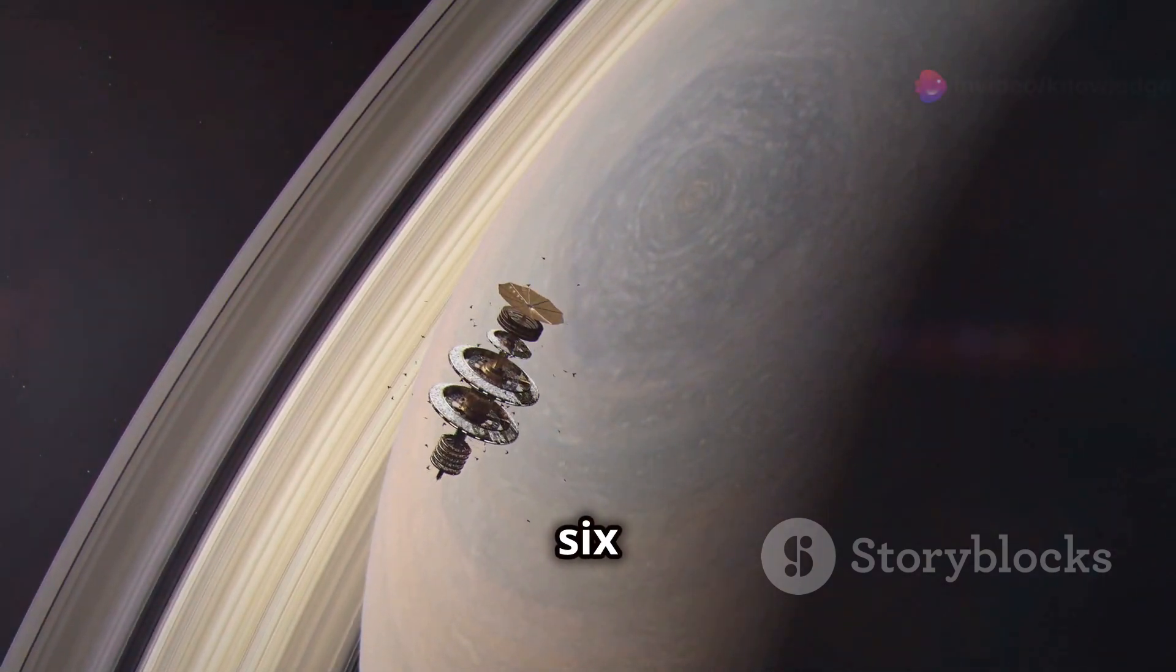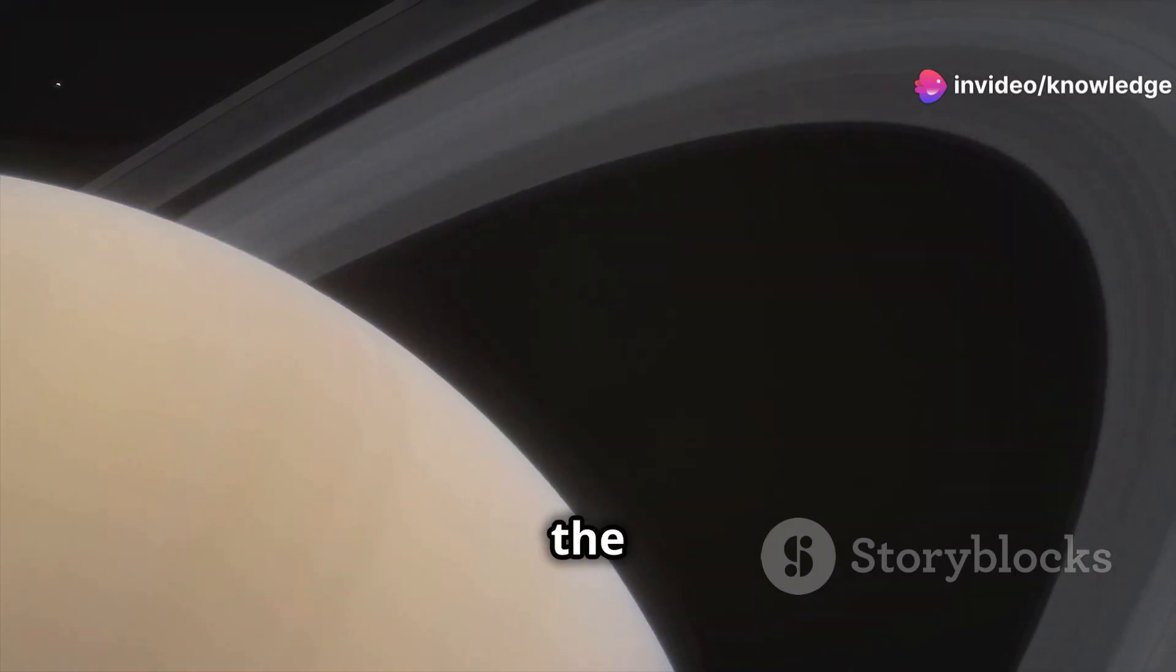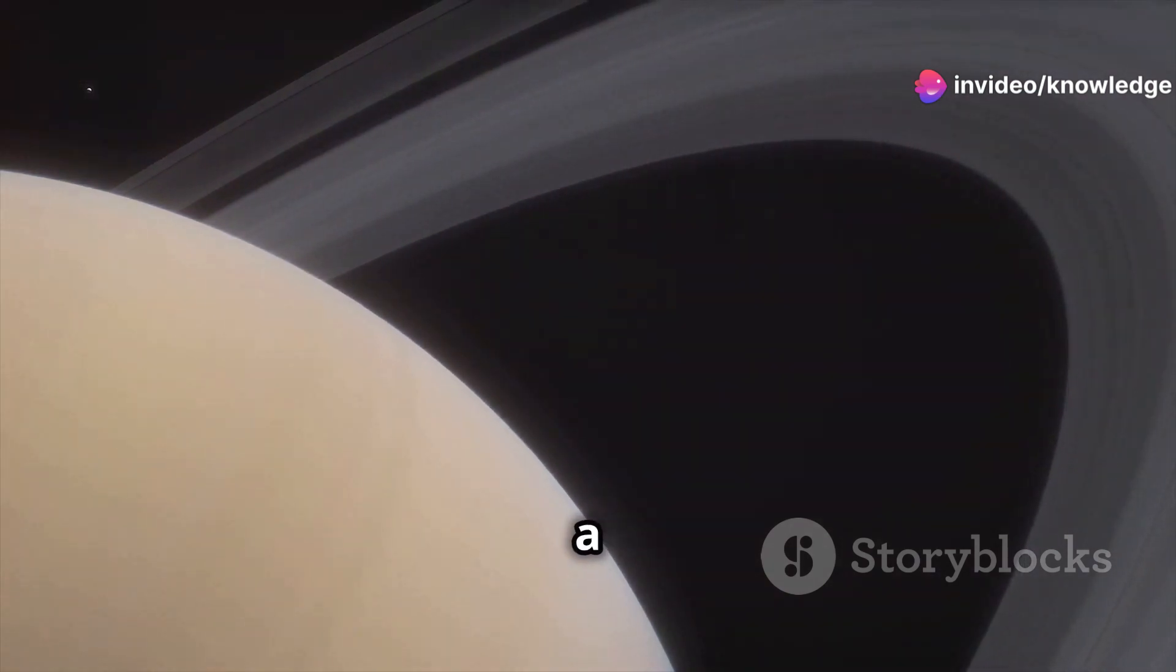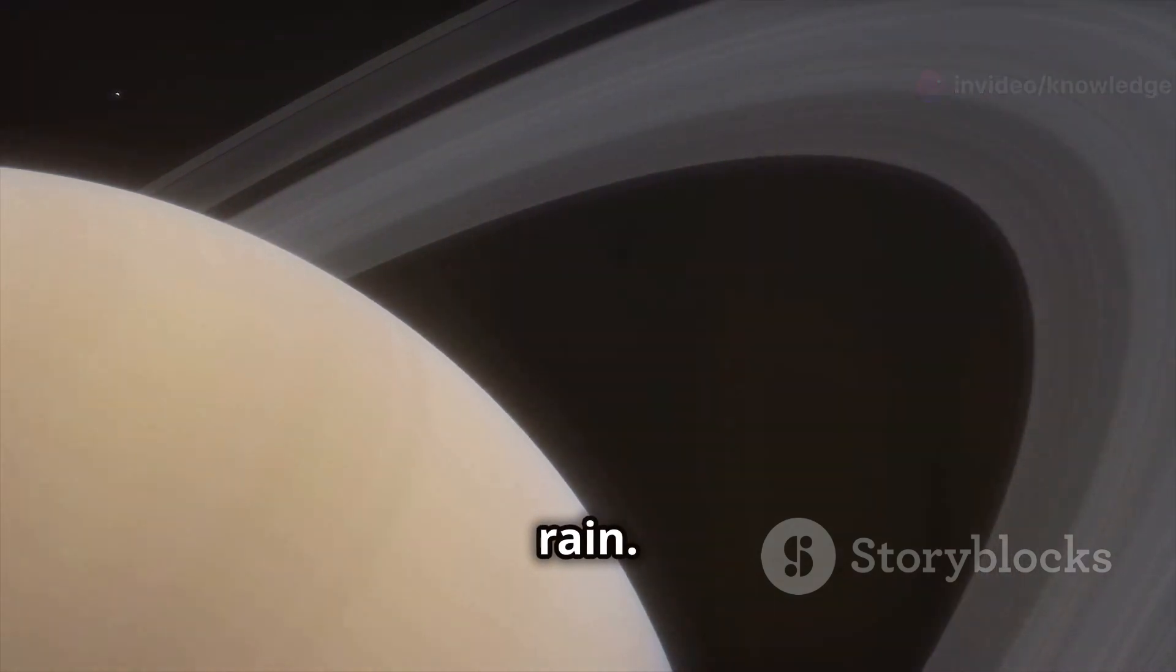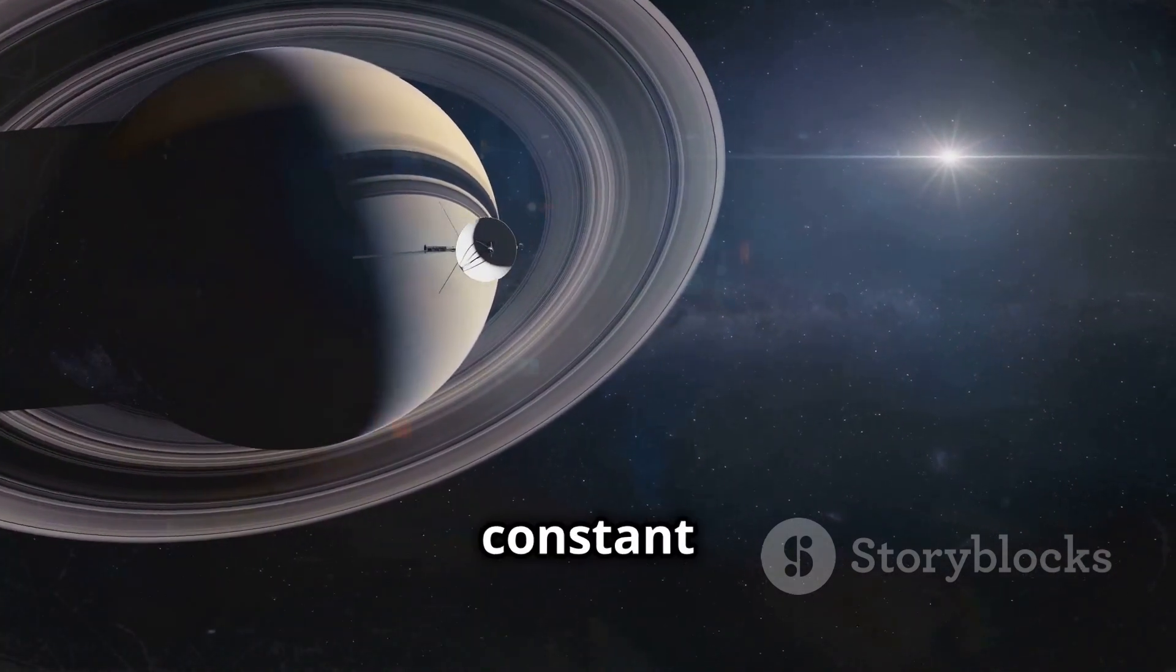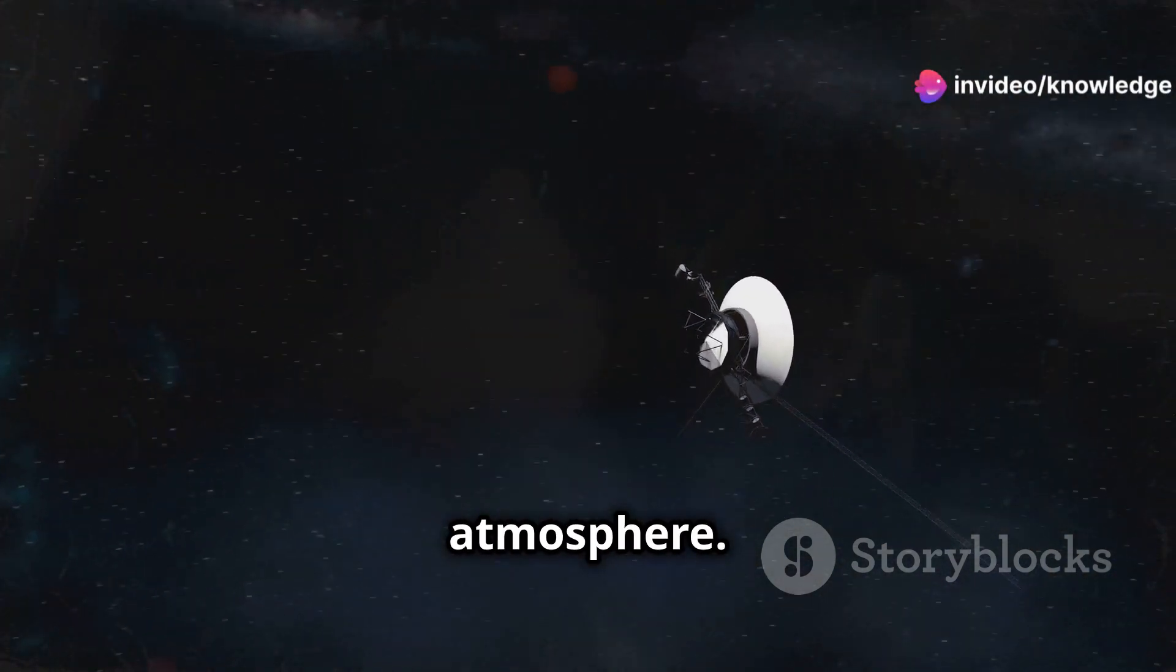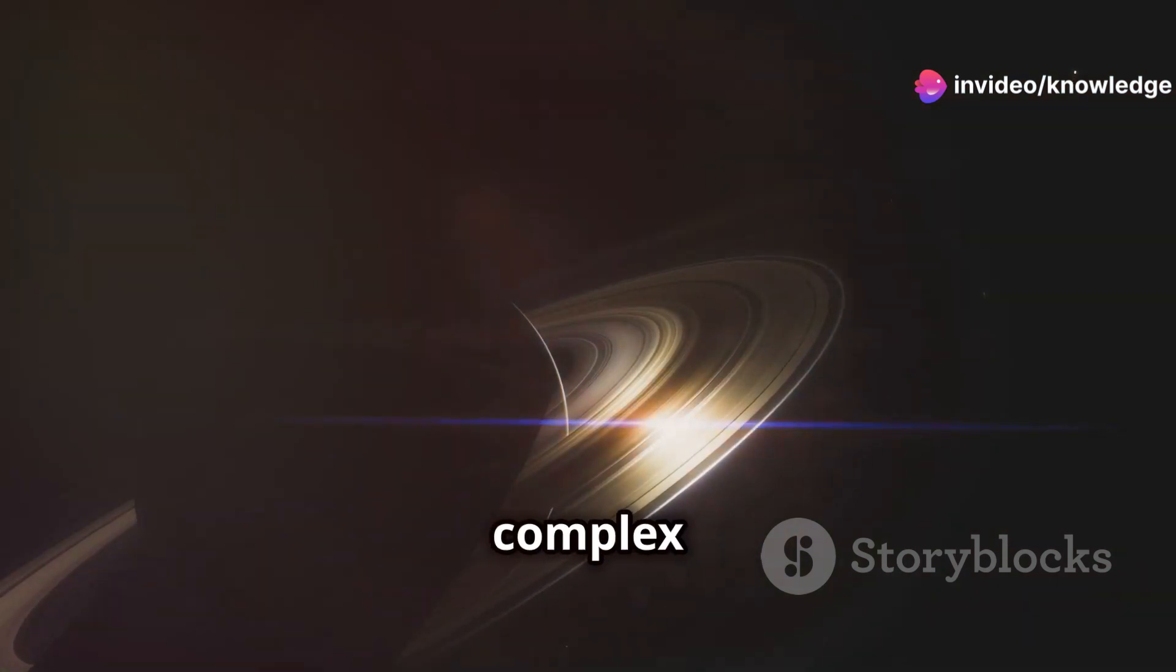The culprit behind the disappearing act of Saturn's rings is a phenomenon known as ring-rain. This isn't rain as we know it on Earth. Instead, it's a constant drizzle of icy particles from the rings onto Saturn's atmosphere.